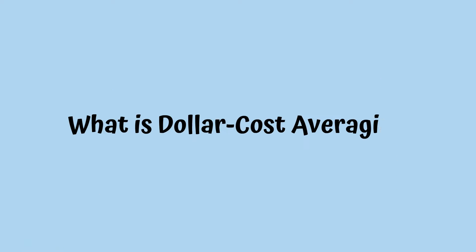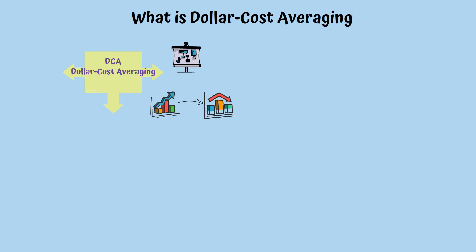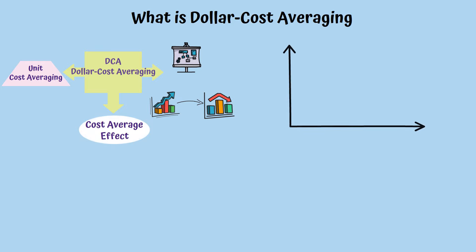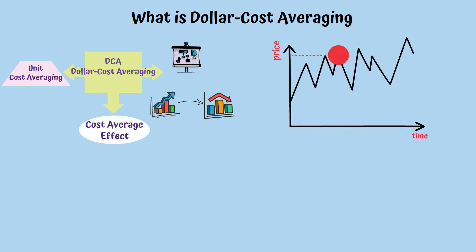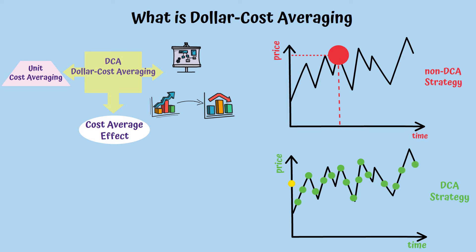What is dollar cost averaging? DCA, for short, is an investment strategy which has the goal of reducing to a minimum the impact of volatility. It is also known as unit cost averaging, incremental averaging, or cost average effect. In DCA, instead of making one single transaction, the investment is divided into smaller amounts, which are invested at regular intervals. DCA tries to minimize the risks associated with volatility by lowering the general average cost of an investment.